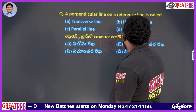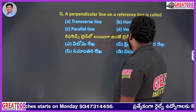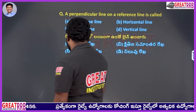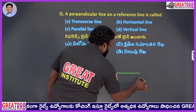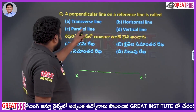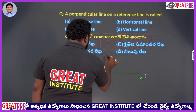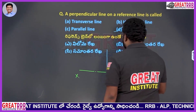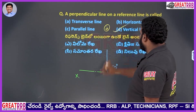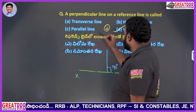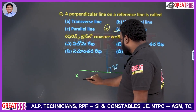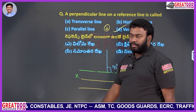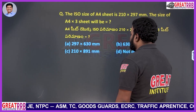A perpendicular line on the reference line is called: A) transverse line, B) horizontal line, C) parallel line, D) vertical line. The reference line is the X-X dash line. A line perpendicular to it, at 90 degrees, is nothing but a vertical line. So option D, vertical line, is the right answer. Transverse lines are also vertical — vertical is 90 degrees to the reference.